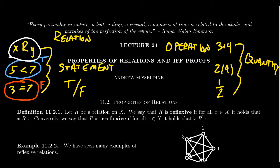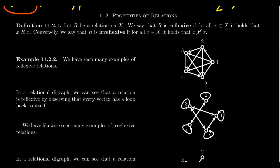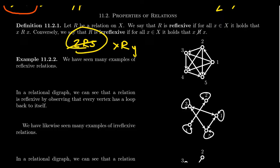We often have to prove things related to relations. In this video, I want to describe some very important properties that relations can have and discuss how one could prove various properties — thinking generically about elements X and Y rather than individual pairs. These are the five top properties we're interested in when discussing a relation.